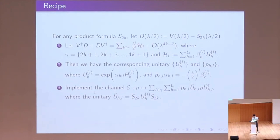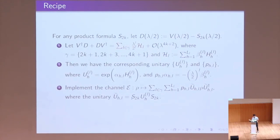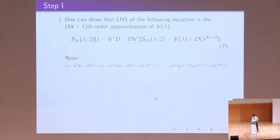If we want to evolve our state, in each step all we need to do is implement this channel. The sampled unitary will have the structure where S_{2K} is the base Suzuki formula, and we insert one unitary to correct the higher-order error, and insert another Suzuki formula around it. Then in the next step we repeat the same procedure R times.